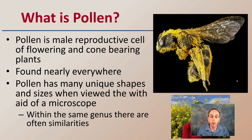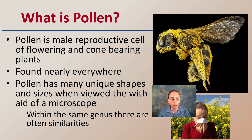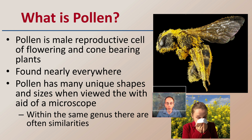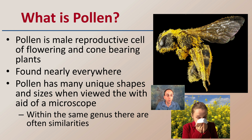Now, what is pollen? Pollen is simply the male reproductive cell of flowering plants — those angiosperms — and cone-bearing plants — those gymnosperms. Pollen is found nearly everywhere, which makes it great to consider for crime scenes.